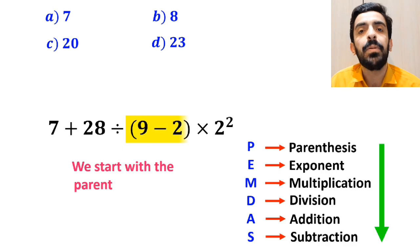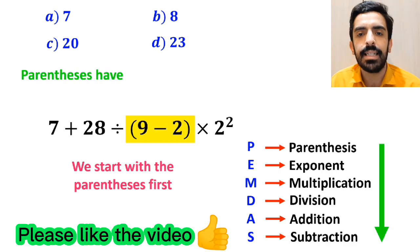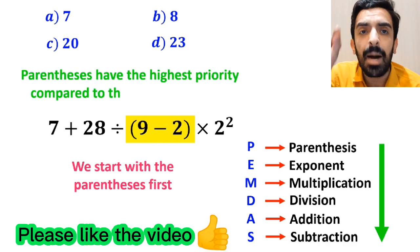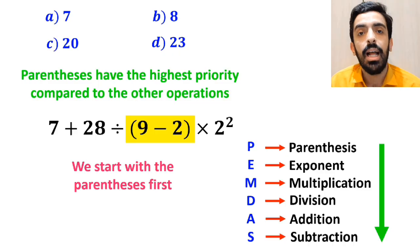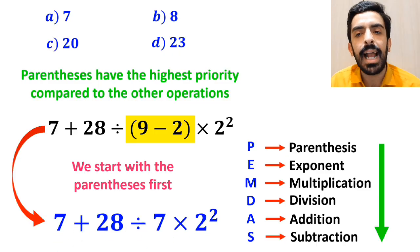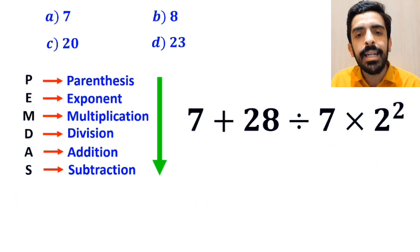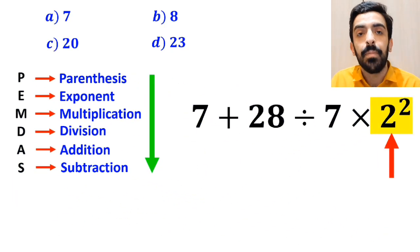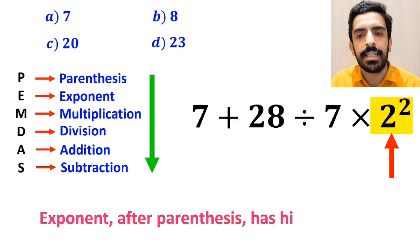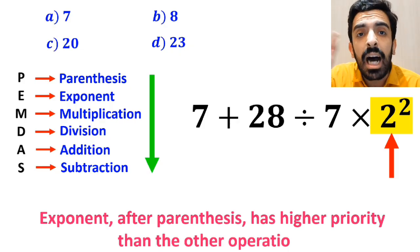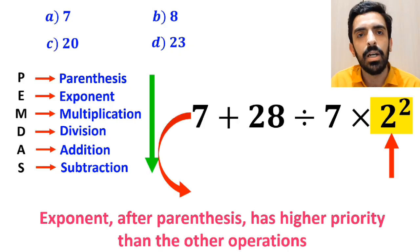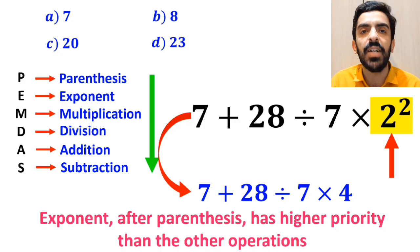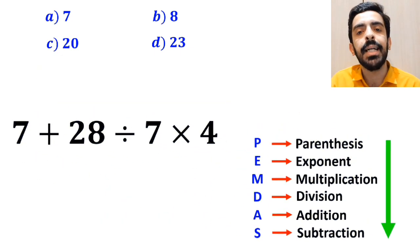We start with the parenthesis first, because parenthesis have the highest priority compared to the other operations. So instead of the parenthesis expression, we get 7 plus 28 divided by 7 times 2 to the power of 2. In the next step, we go to the exponent, because after parenthesis, the exponent has higher priority than the other operations. This simplifies to 7 plus 28 divided by 7 times 4.